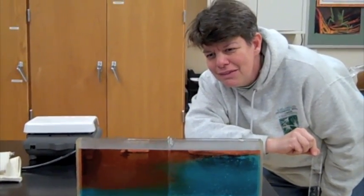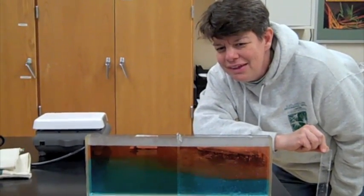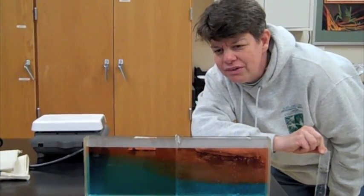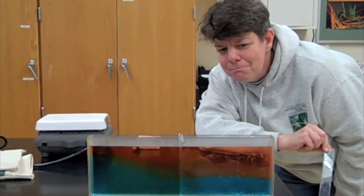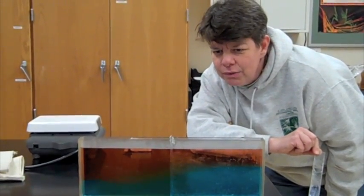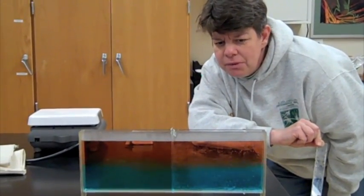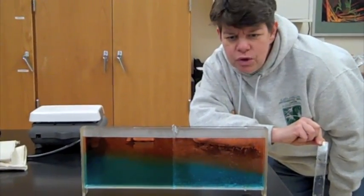The convection current is transporting around the heat, and the water is being separated by its density. The warmer water is going to end up on top, and the cooler water is going to end up on the bottom, similar to the ocean.